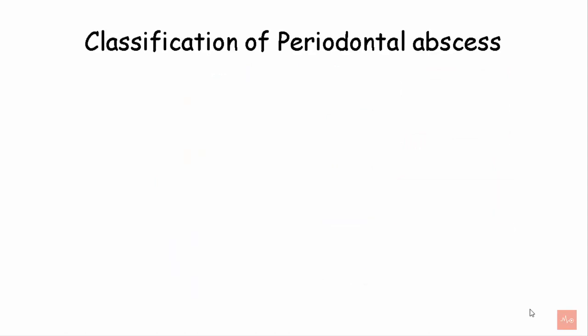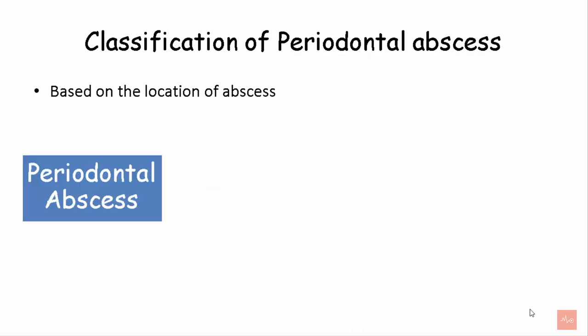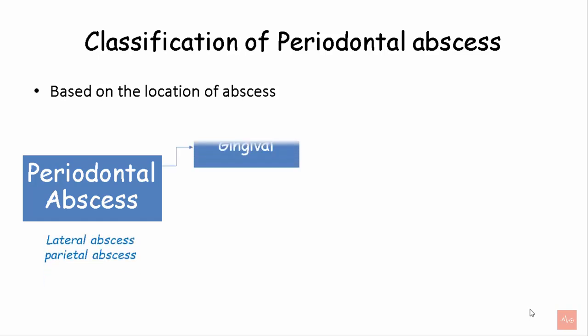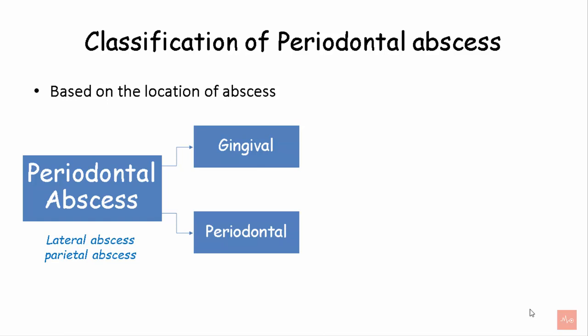A periodontal abscess is an abscess associated with the periodontal tissues. These are classified based on the location of the abscess, and are also called lateral abscess or parietal abscess. They can either be gingival or periodontal.